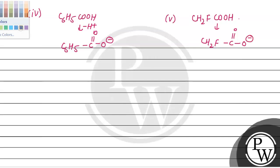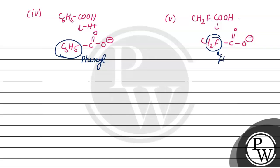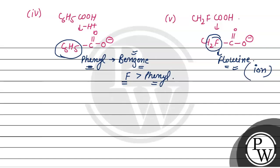C6H5COOH में phenyl group लगा है और CH2FCOOH में fluorine लगा है। यह दोनों ही electron withdrawing groups हैं। Phenyl group में benzene ring है जो due to minus I and minus R effect electron withdrawing nature शो करती है, और fluorine भी due to its electronegative nature electron withdrawing है। लेकिन compare करें तो fluorine और phenyl group में से fluorine अपनी electronegativity की वजह से ज़्यादा electron withdrawing कर पाएगा as compared to phenyl group। तो जिसमें fluorine present है, उसका ion ज़्यादा stable होगा, इसलिए वो stronger acid होगा।